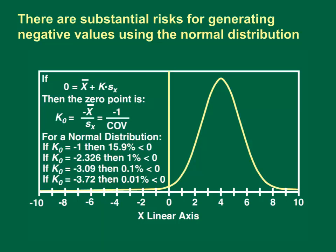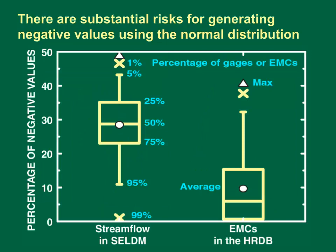The associated zero point on an arithmetic scale would be a normal frequency factor of minus 1.33. If a normal distribution with a coefficient of variation of 0.75 is used to model data, about 9.2% of values would be less than or equal to zero. This graph shows that the risk for obtaining arithmetic values that are less than or equal to zero can be substantial if the normal distribution is used for modeling pre-storm stream flow or highway runoff concentrations.